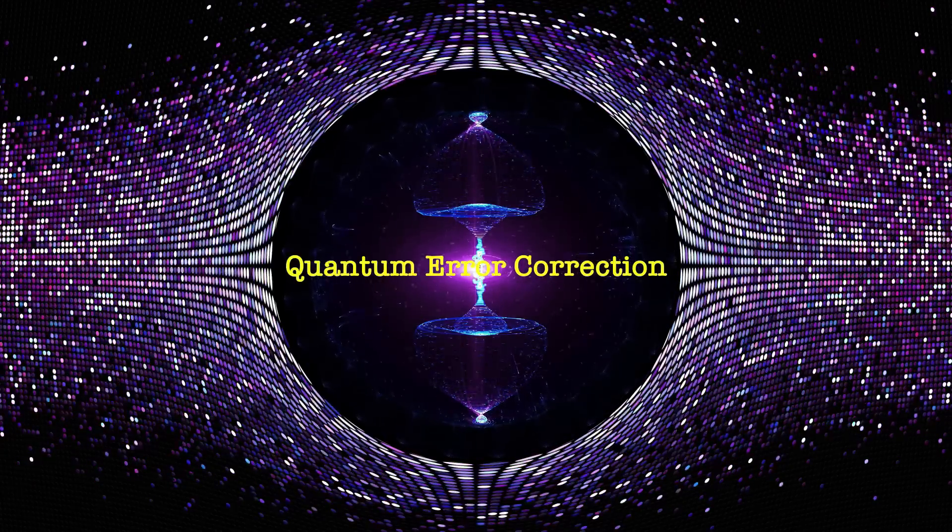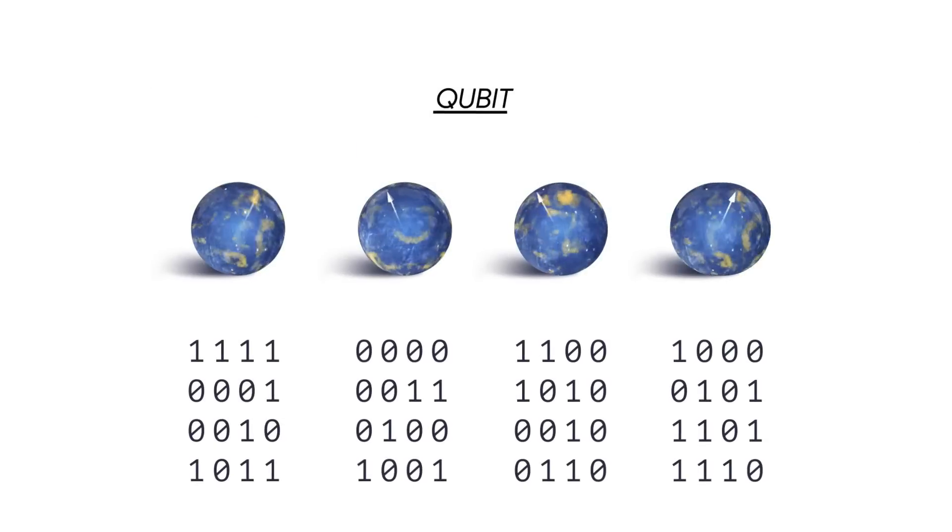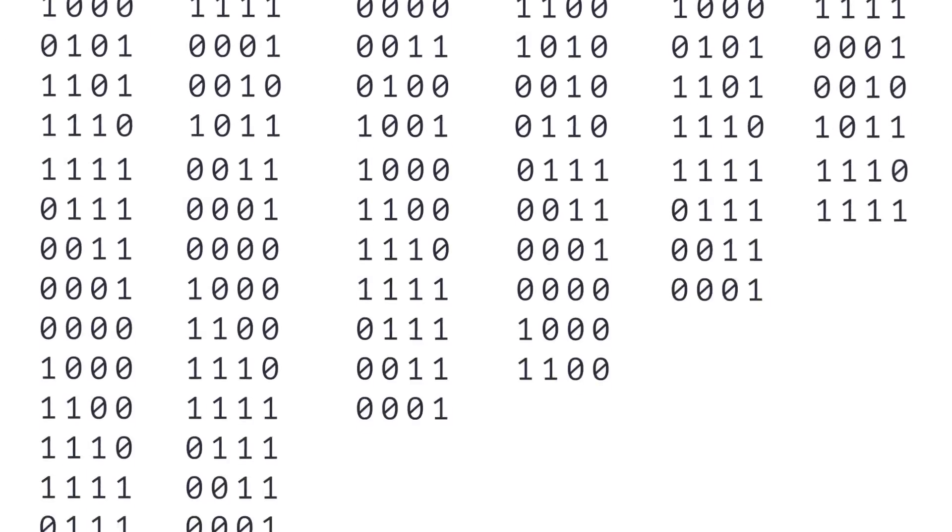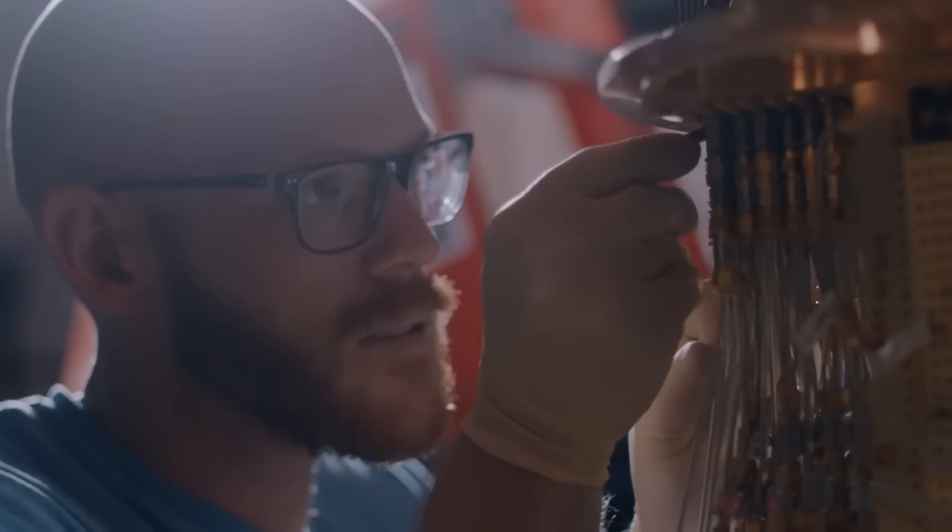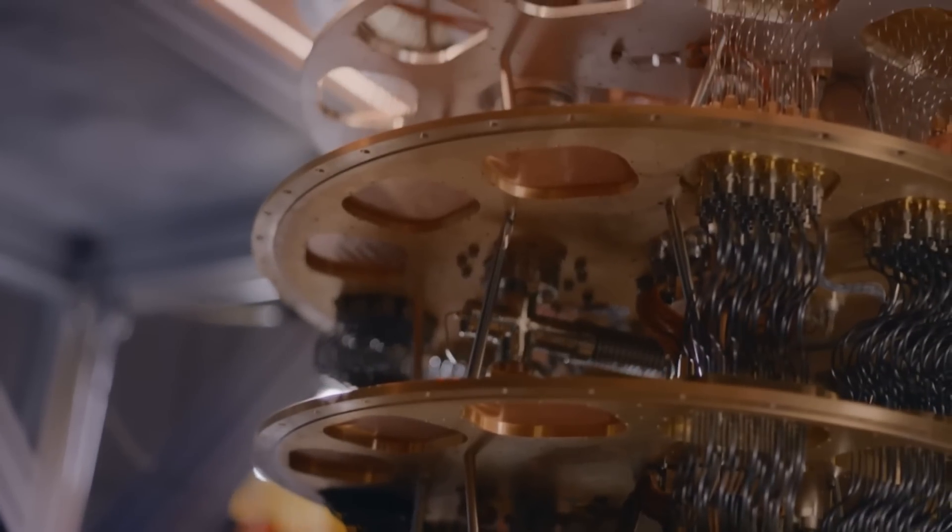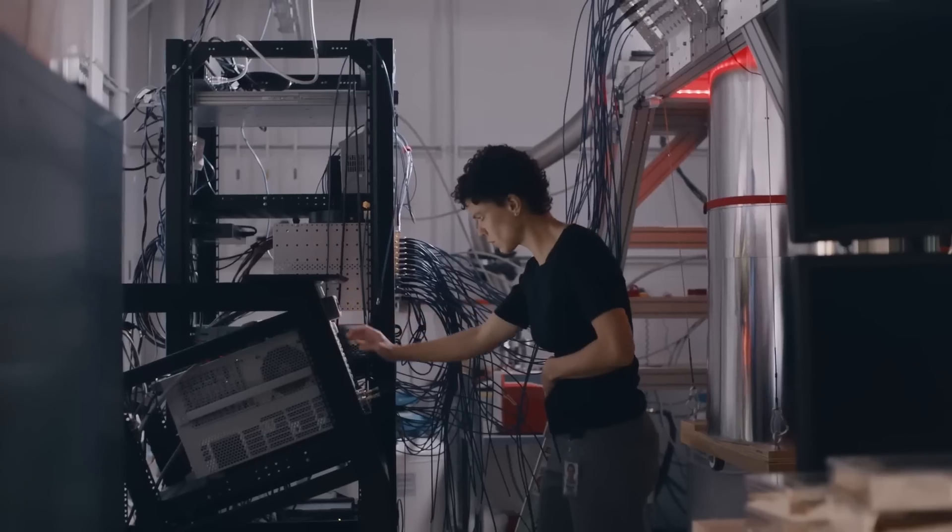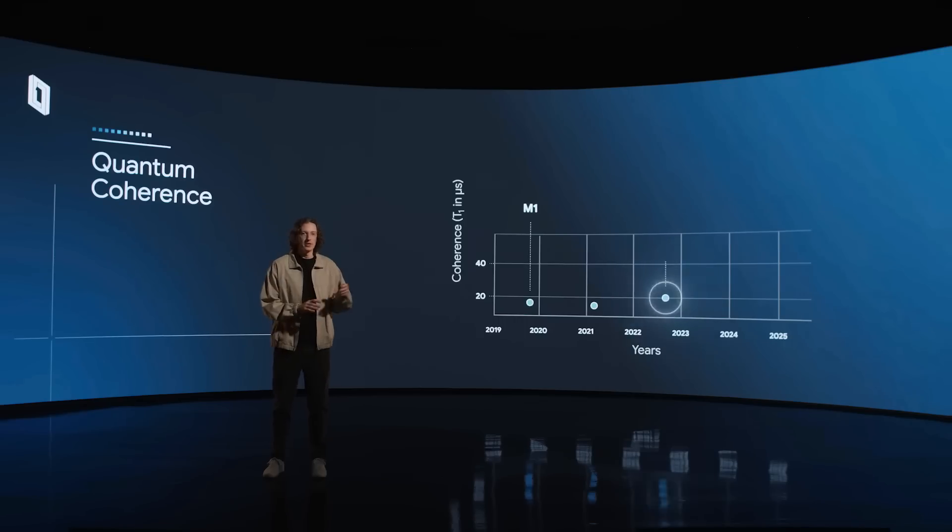Quantum Error Correction. For quantum computers to be practical, they must address errors, an issue classical computers don't face as much. The quantum states in a qubit are incredibly fragile. They are easily disrupted by heat, noise, or even cosmic rays, causing information loss. This is where quantum error correction becomes essential.